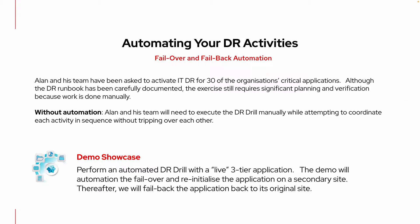In this particular demo, we will perform an automated disaster recovery trail with a three-tier application. We will automate the failover of the application from the primary to the secondary site and re-initialize the application on the secondary site. After which, we will failback the application to the original site in an automated fashion as well. These are the usual steps that the disaster recovery team will need to work on, and we want to leverage automation rather than having everyone come on site to perform this activity.